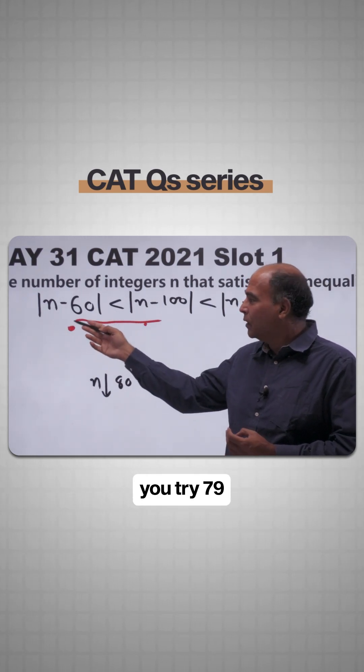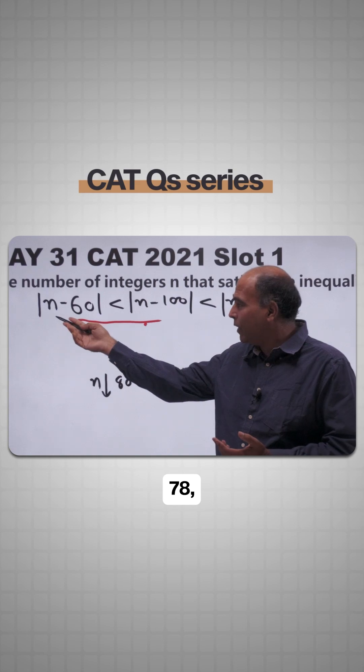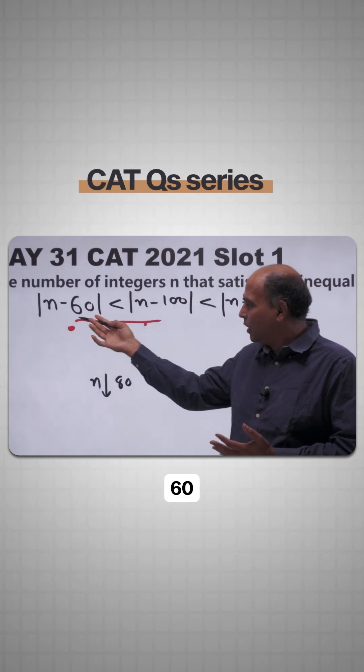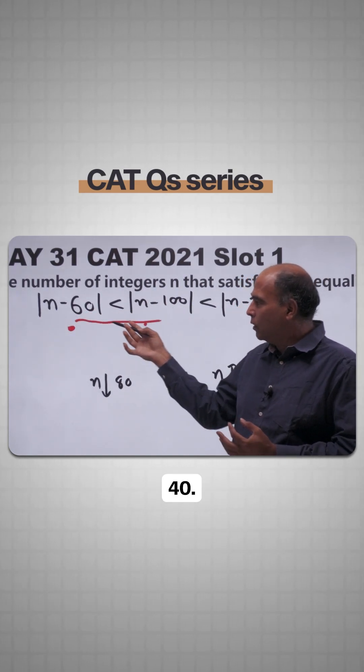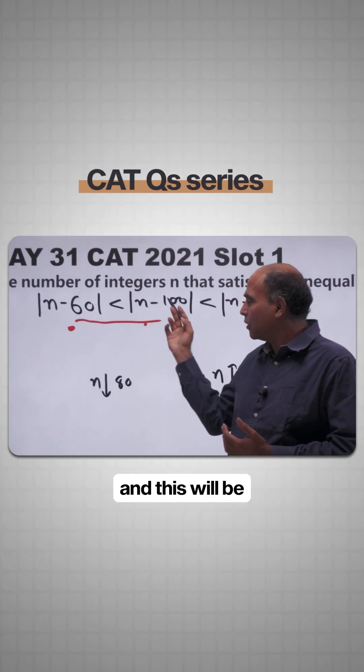For example, if you try 79 or 78, at 78 this will be 18 and this will be 22. At 60, this will be 0 and this will be 40. Even at n equals 0, this will be 60 and this will be 100.